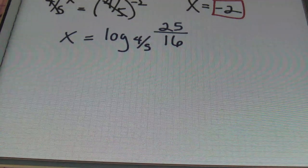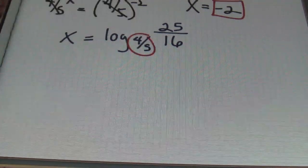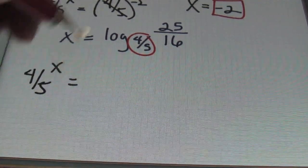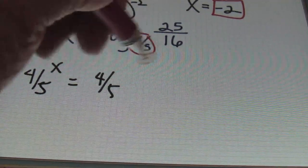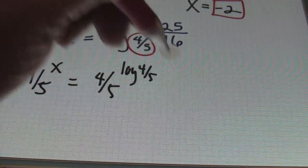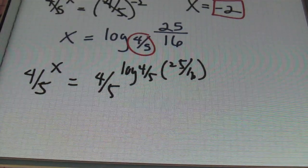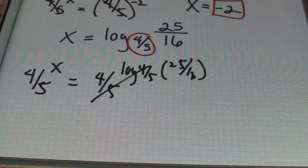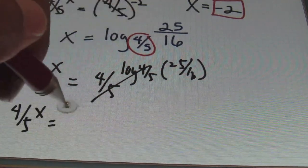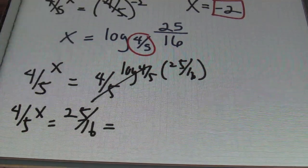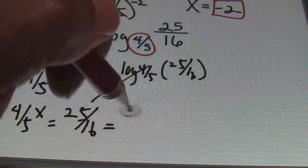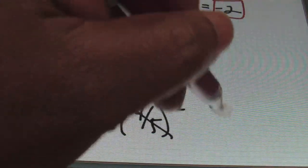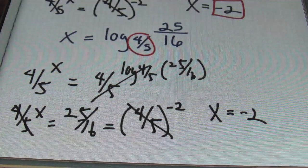Using the method of exponentializing problem 4, I'll use a base of 4/5 on either side of the equal sign. So I have (4/5) to the x equals (4/5) raised to the log base 4/5 of 25/16. All of that log expression cancels out, and I have (4/5) to the x equals 25/16, which we know is equivalent to (4/5) to the negative 2 power. So once again these 4/5 cancel out and x equals negative 2.